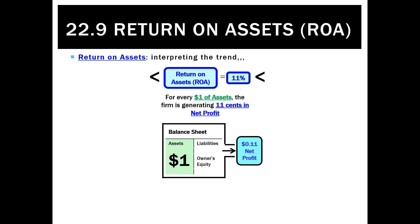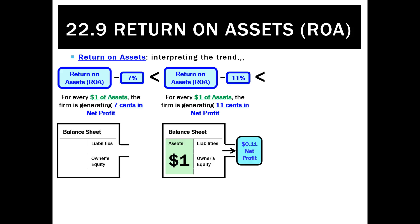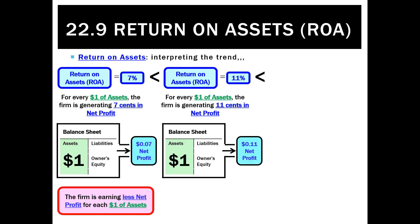Interpreting the trend: if it was 11%, that's 11 cents net profit for every dollar of assets. If that went down to 7%, that's a bad trend. It means for every dollar of assets this year, we only managed to use them to make a net profit of 7 cents. So we are less profitable — we've earned less net profit for each dollar of our assets.